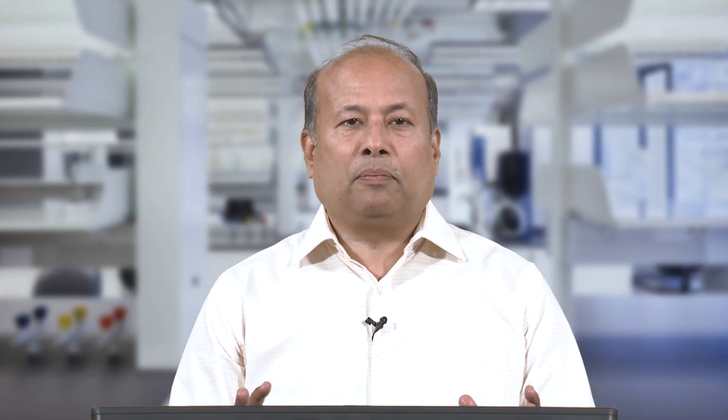From a planning criteria perspective, there should be a 50-year plan for anticipated load growth and forecast load centers, with annual review based on achieved targets. A detailed project report should identify long-term and short-term system strengthening networks, address poor-performing feeders, reconfigure them, augment line conductors and distribution transformers, implement new technologies for system improvement, and develop a loss minimization plan over time.